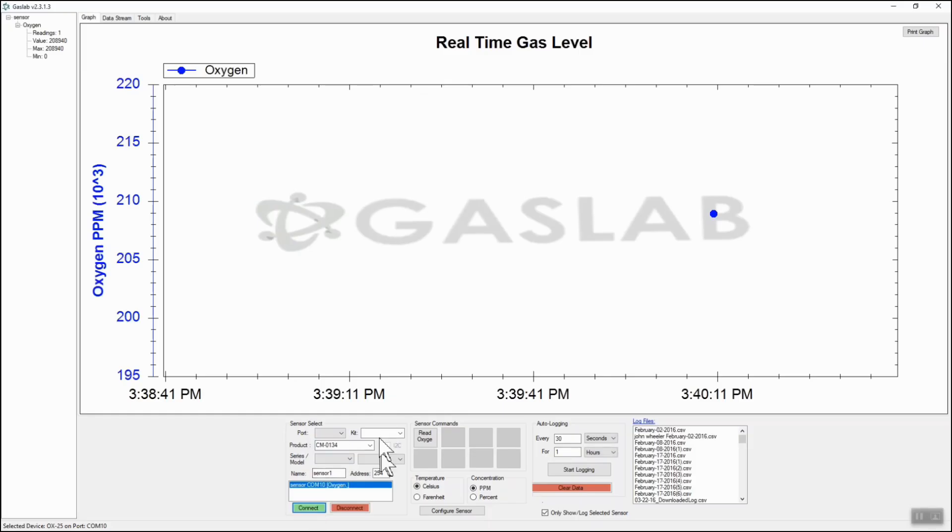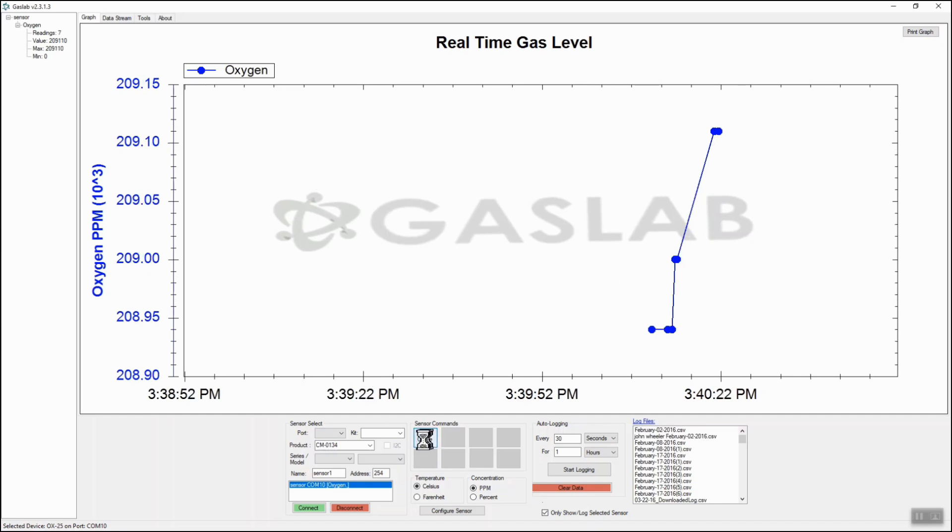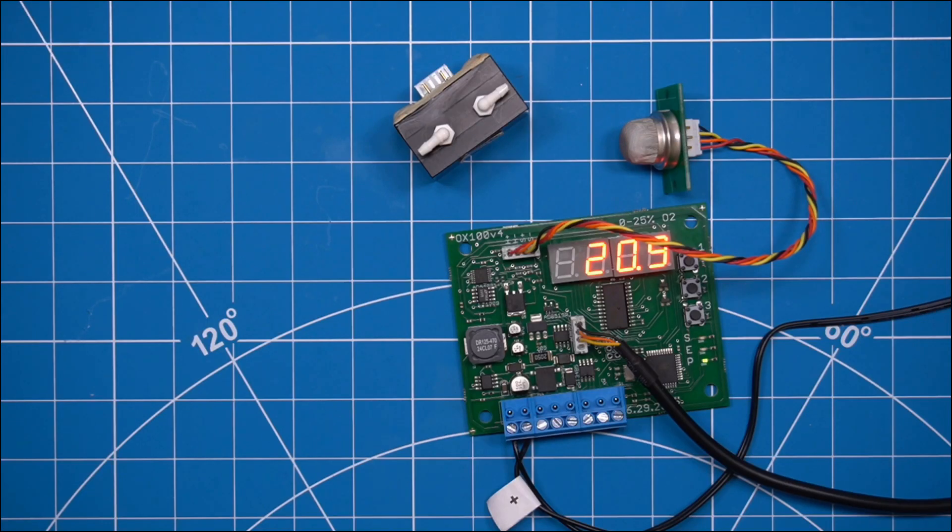I have already set up a port and selected this as a device and I make my measurements and so you can see that we're right around 20 percent oxygen and I can show a little bit of nitrogen.